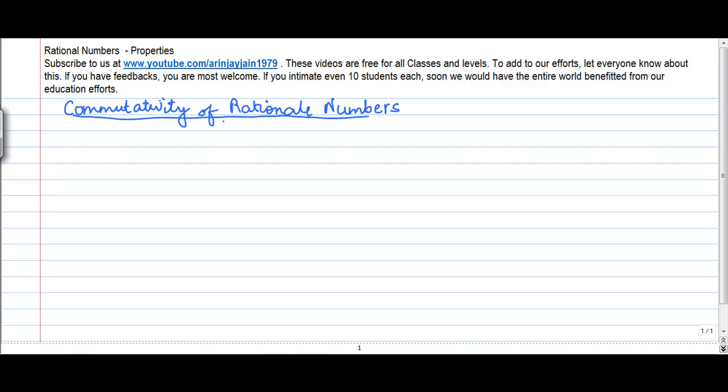We saw earlier when we dealt with natural numbers and whole numbers that if suppose you have two numbers 5 and 6, and when I say commutativity of rational numbers, I am dealing with addition in this video. Now when you have two numbers 5 and 6 and you want to take a sum of these two numbers, so 5 plus 6 is equal to 11.